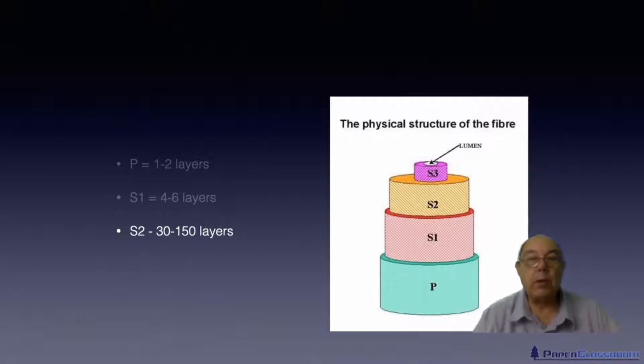The S2 has the nickname the paper makers layer, because that's where almost all the cellulose is. So in the S2, there are between 30 and 150 layers of fibrils. And finally, we get to the S3. The S3 is exactly the same as the S1. There are somewhere between four and six layers of fibrils.